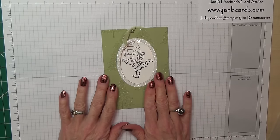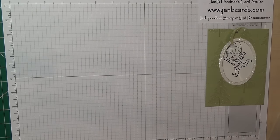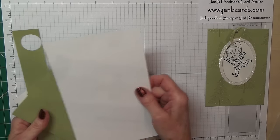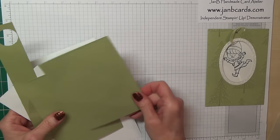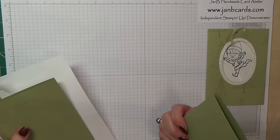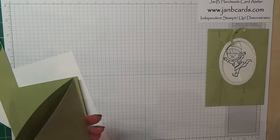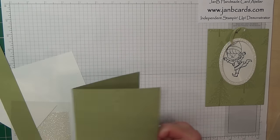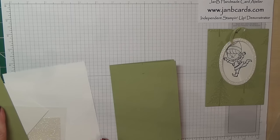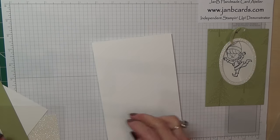To start off with, I'm going to tell you the cardstock we need. First of all, a card base as normal which measures eight and a quarter by five and three quarters scored at four and one eighths, and a piece of whisper white cardstock that is eight inches by five inches.